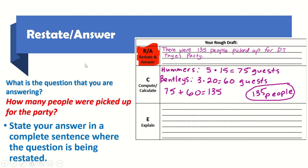Now it's time to restate an answer. What is the question that you are answering? The original question was: how many people were picked up for the party? So you would state your answer in a complete sentence where the question is being restated. Here's the restating and answering in a complete sentence: There were 135 people picked up for DJ Tay's party.